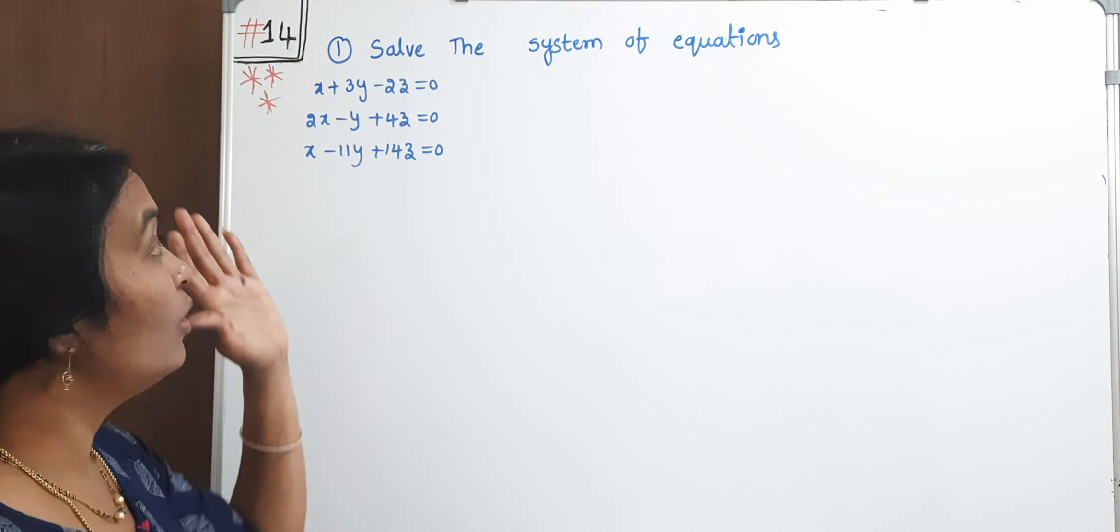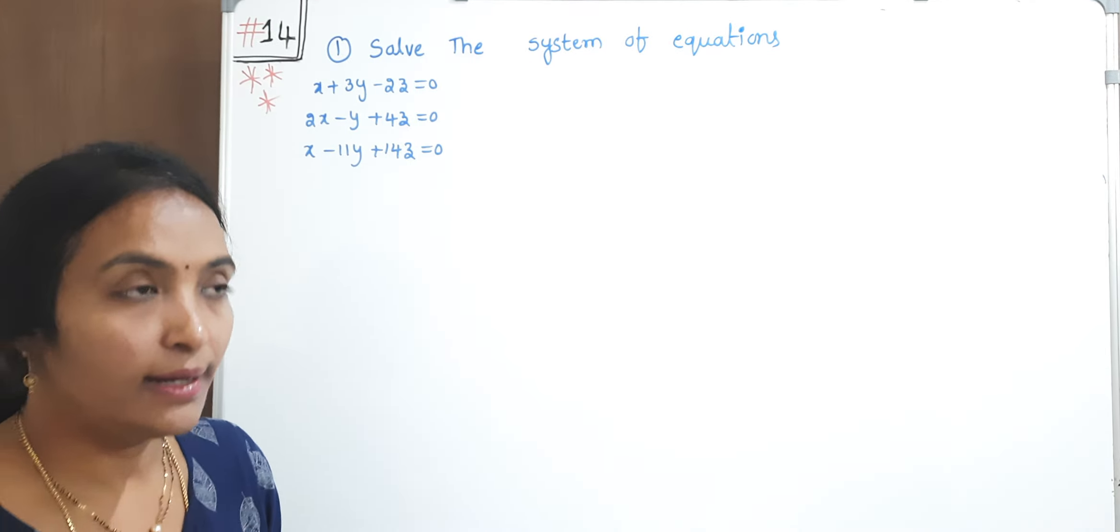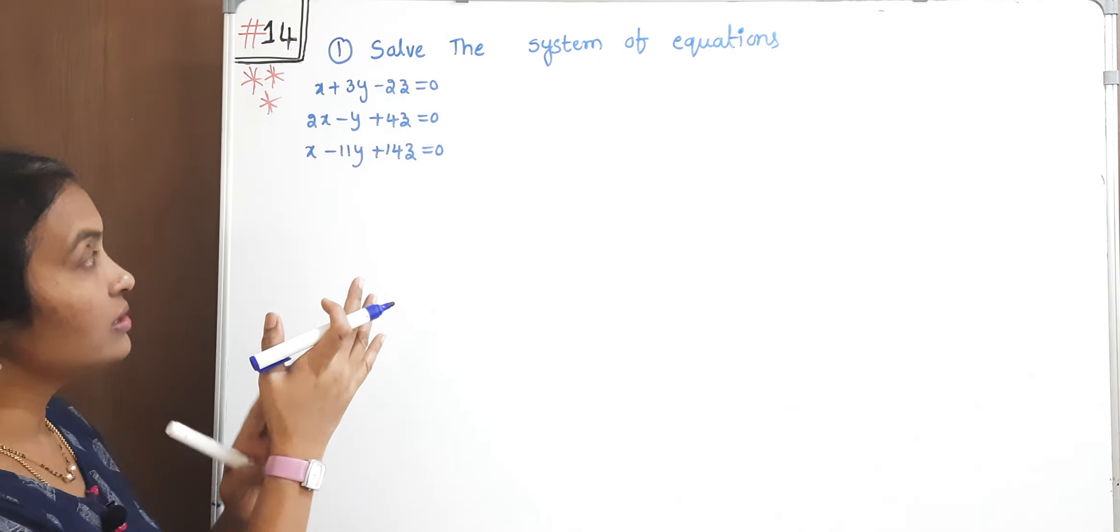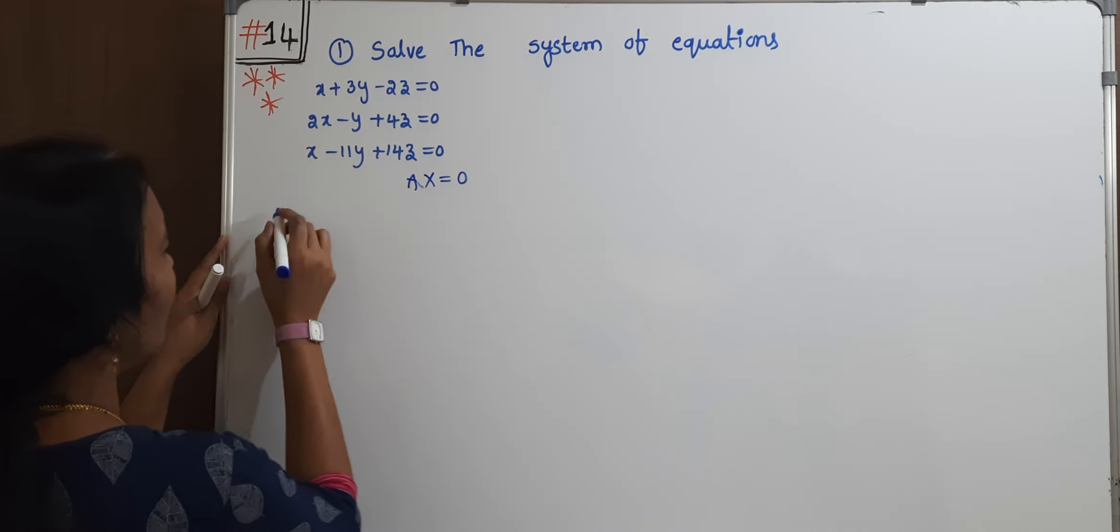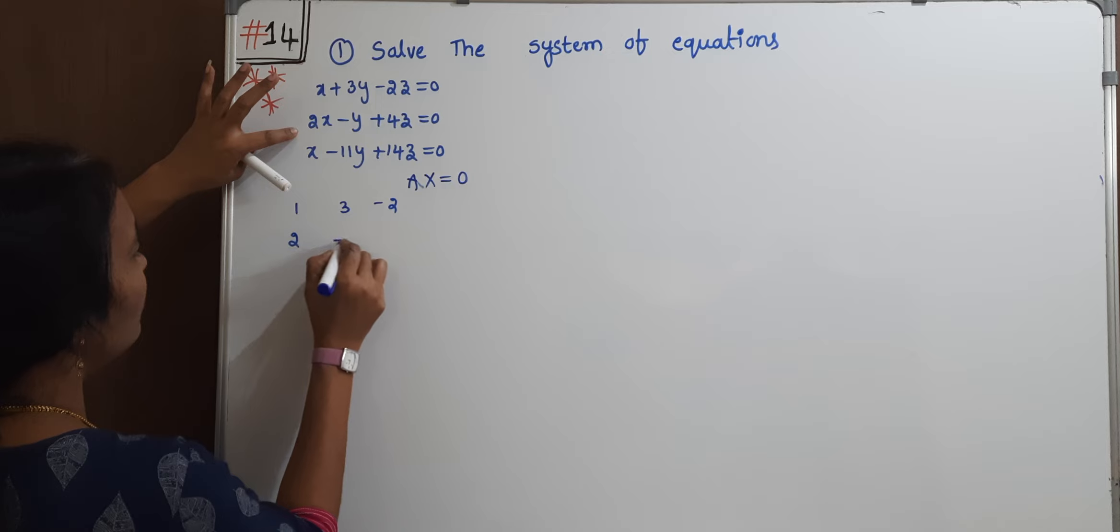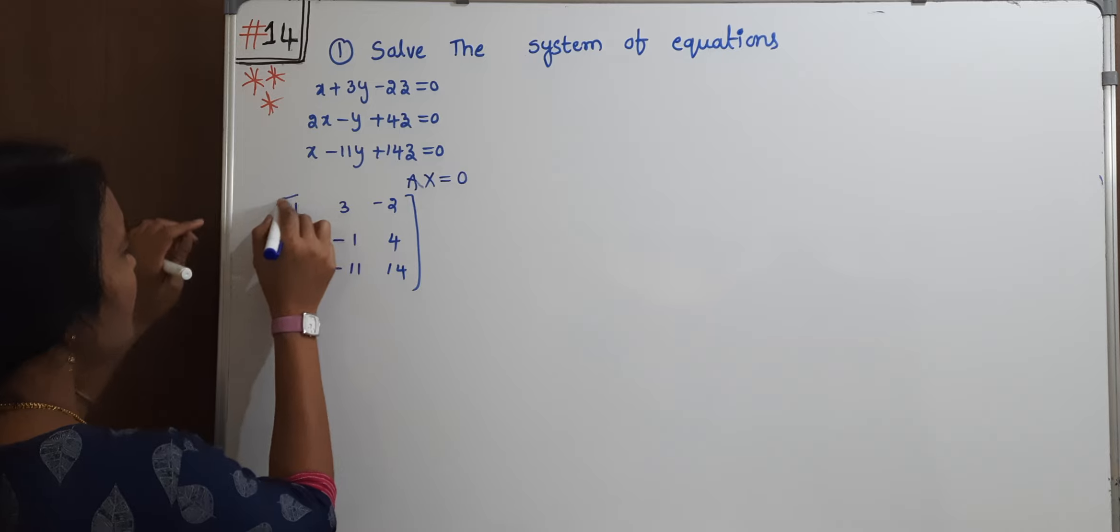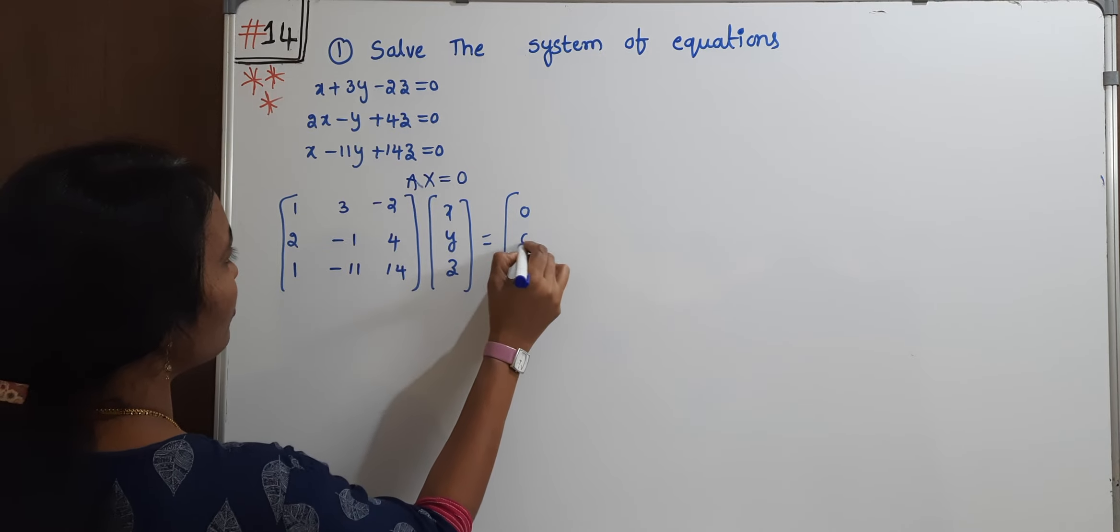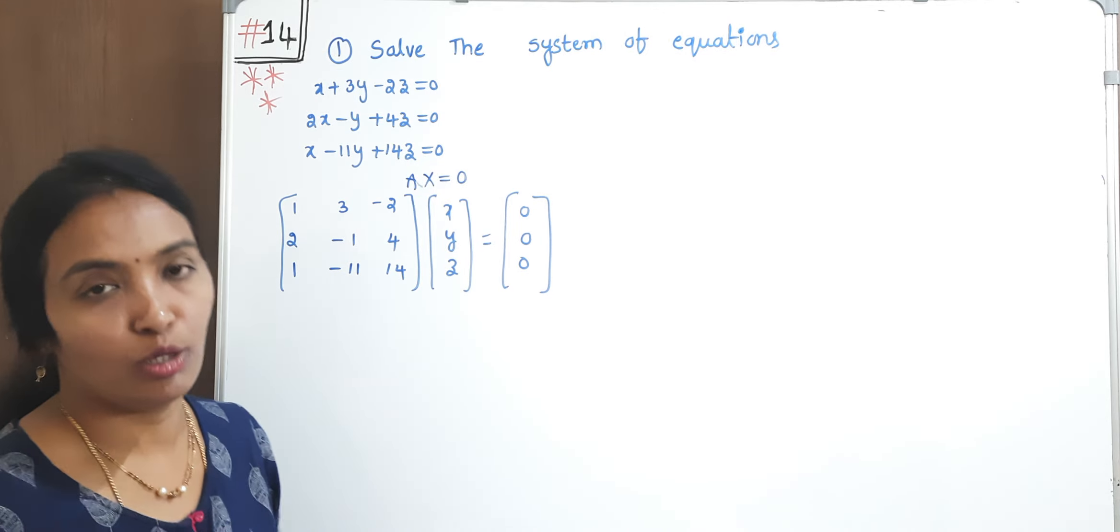What we have to do is solve the system of equations. First, consider the matrix A. The given system of equations can be expressed in the form AX is equal to zero. Here, what is our A? The coefficient matrix. What is our X matrix? The unknowns x, y, z equal to the system of equations expressed in matrix form, that is AX is equal to zero.